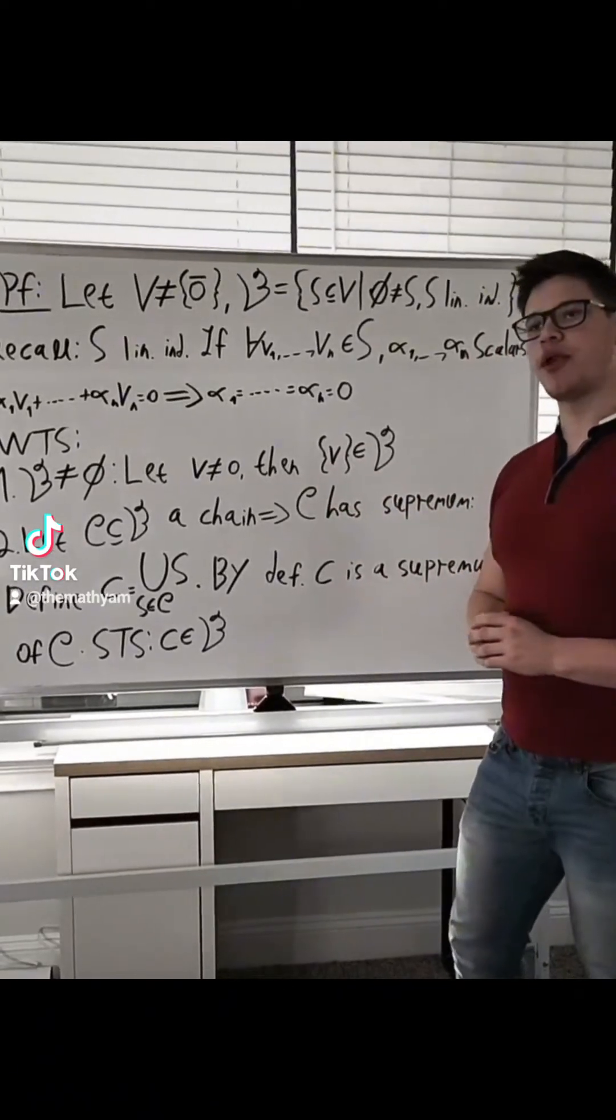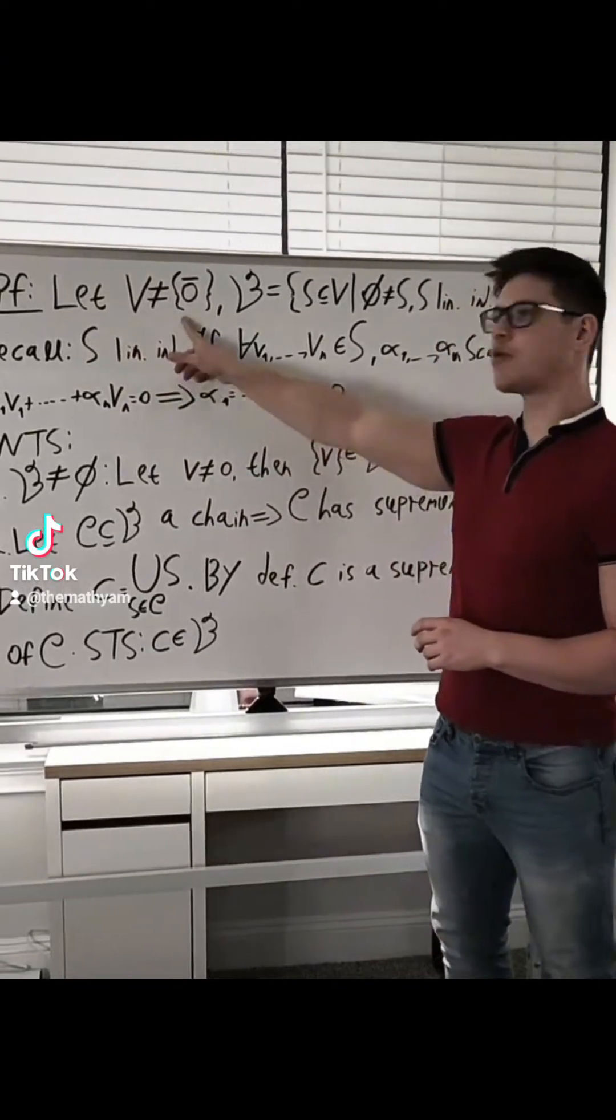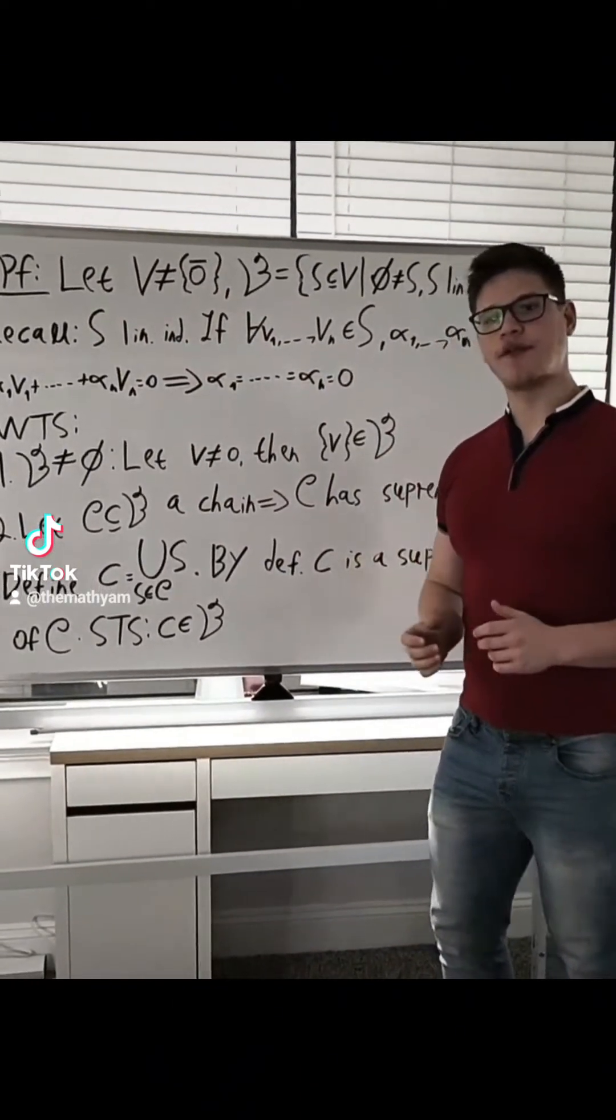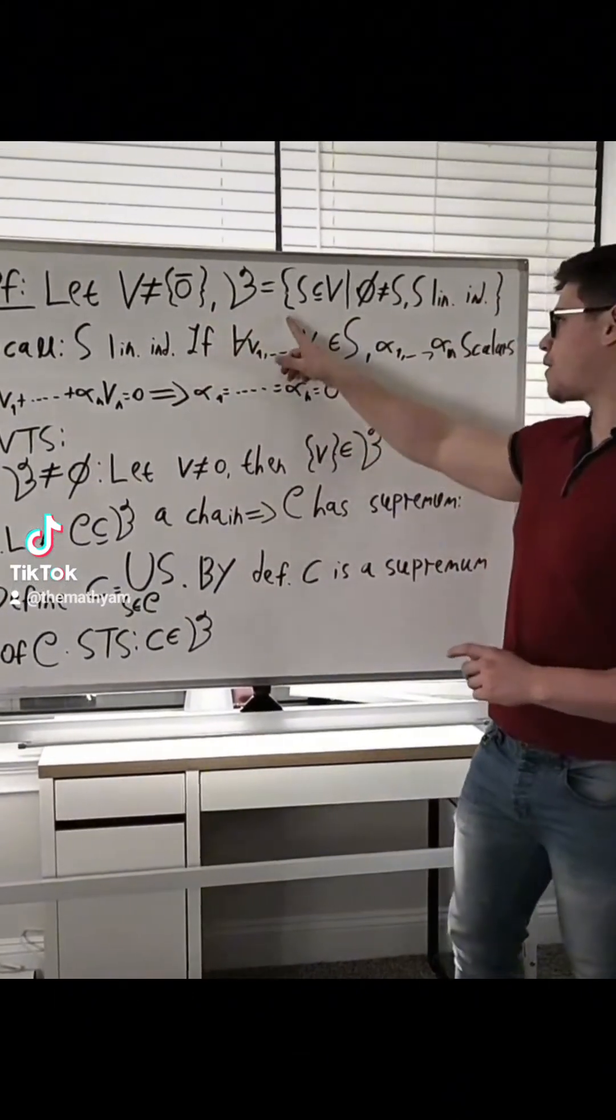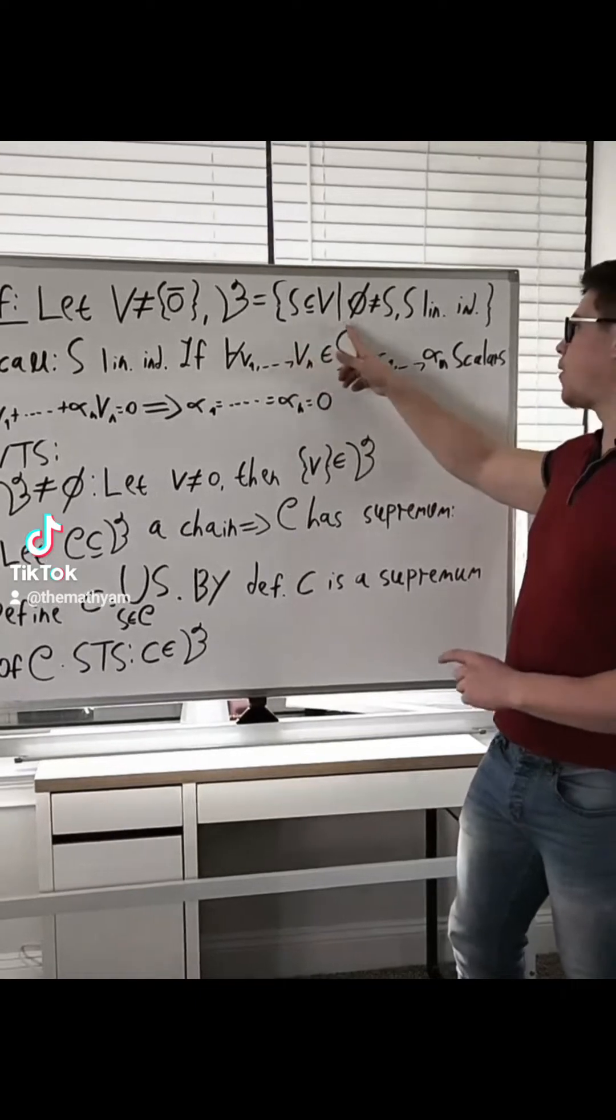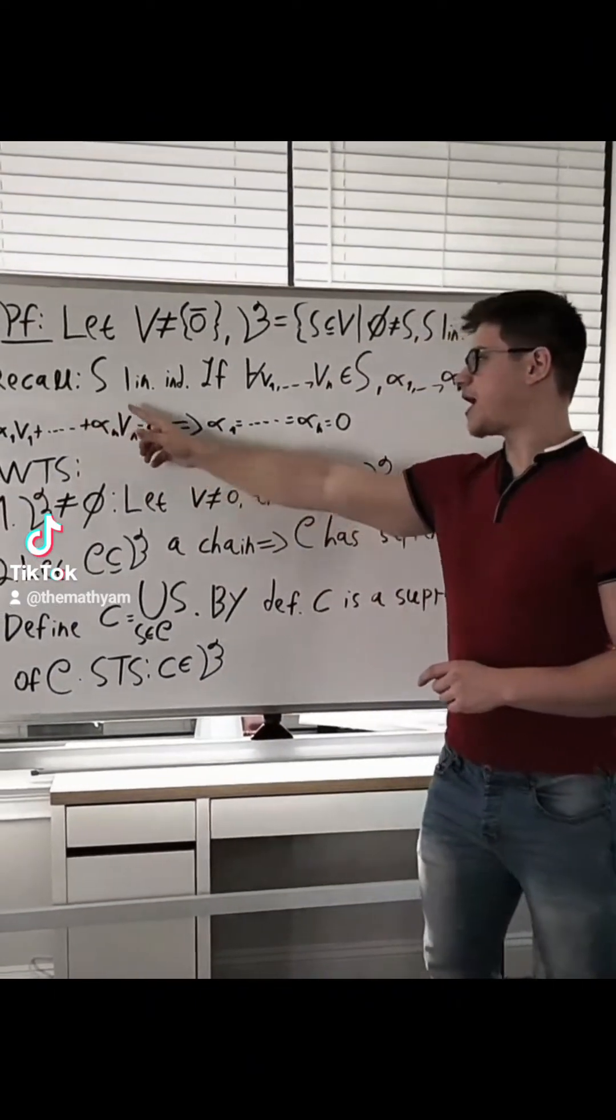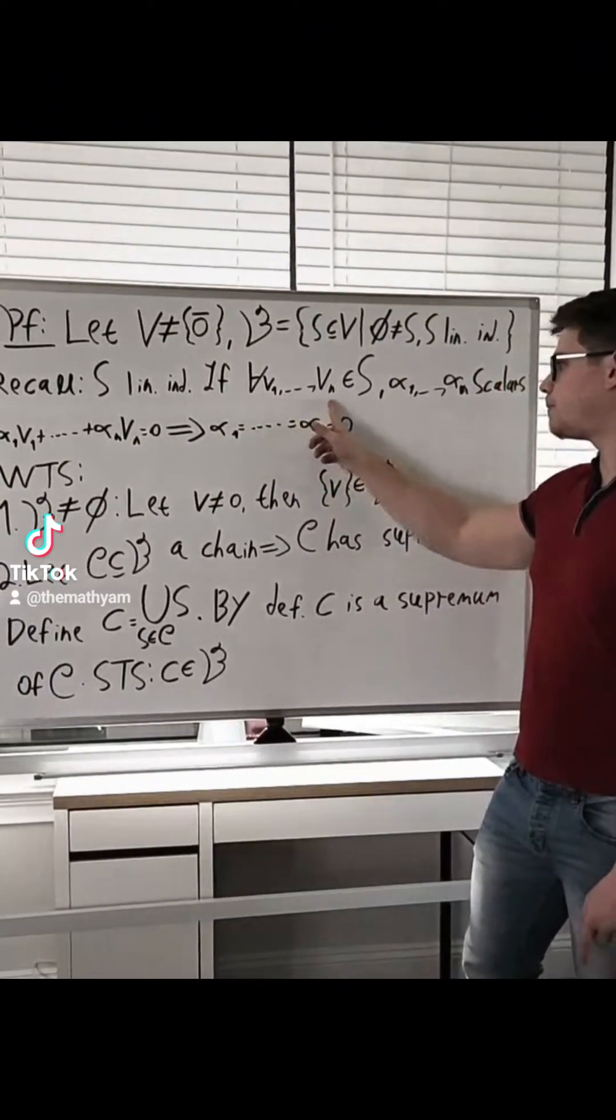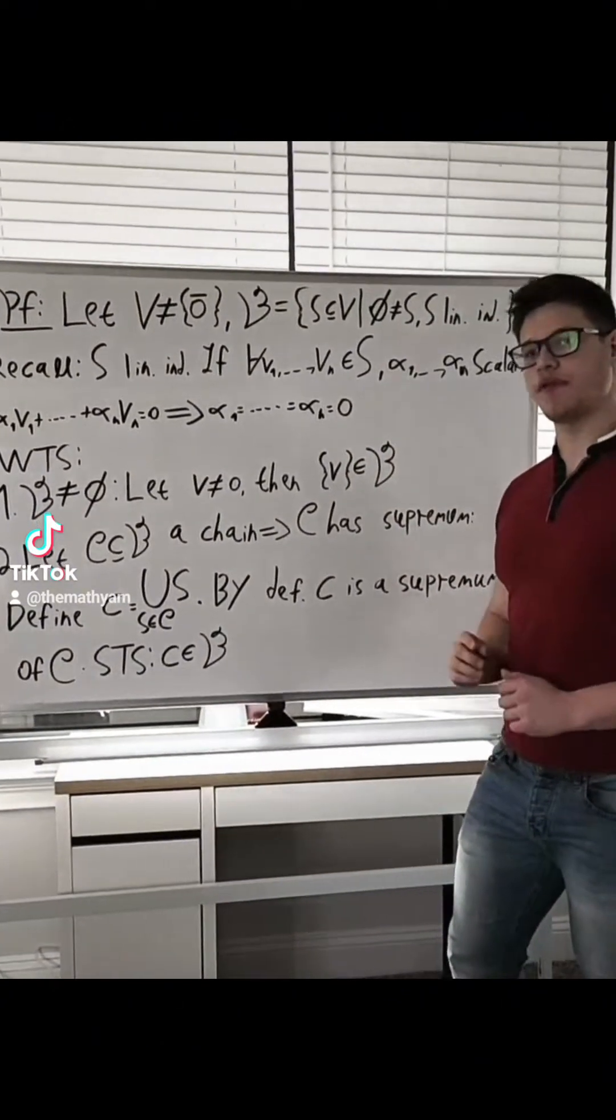So equipped with Zorn's Lemma, we are now ready to prove the theorem. Let V be a vector space that is not the zero space. If V is the zero space, then by definition its basis is just the empty set. Let B be this set: all subsets of V that are non-empty and linearly independent. Now recall that a set S is linearly independent if for every finite collection of vectors V1 up to Vn in S, there is no non-trivial linear combination of them.